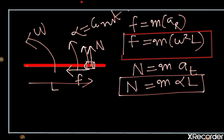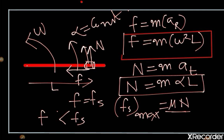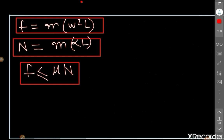Until the body is not sliding, the friction must be equal to or less than the maximum static friction force. The maximum static friction force Fs_max equals mu times N. So the condition is: friction force must be less than or equal to mu × N for as long as the body is not sliding. To summarize the equations: f = mω²L, N = mαL, and f ≤ μN.